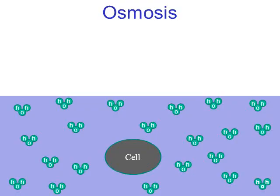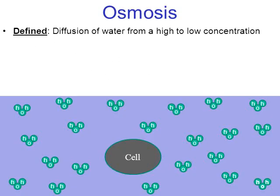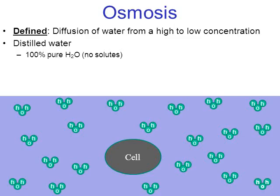Let's turn to another type of passive transport called osmosis. Osmosis is the same thing as diffusion — don't mix the two up. The big difference is that osmosis implies water: it's the diffusion of water from a high concentration to a low concentration. In this animation, pretend we have a container of distilled water — 100% pure water with no solutes, created basically in a chemistry lab. Here we have a cell placed in a container of 100% pure water. This is an example of what is called a hypotonic environment.